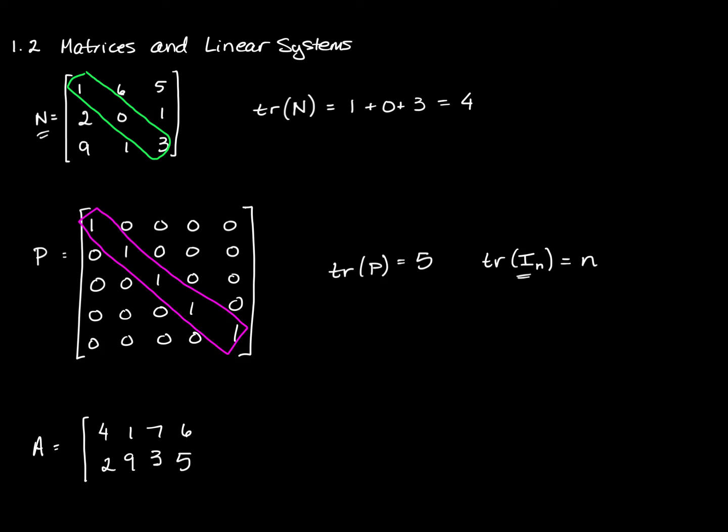So I have a 2 by 4 matrix, and the trace here is not possible to find, because I don't have a main diagonal. I only have two columns that have diagonal entries in them. The third and fourth column do not have diagonal entries. So the trace of matrix A does not exist. It's not technically correct to write it as an equation; it just does not exist.